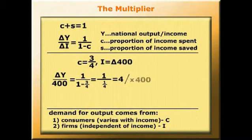So multiply each side by 400, and we have the change in Y is equal to 1600.